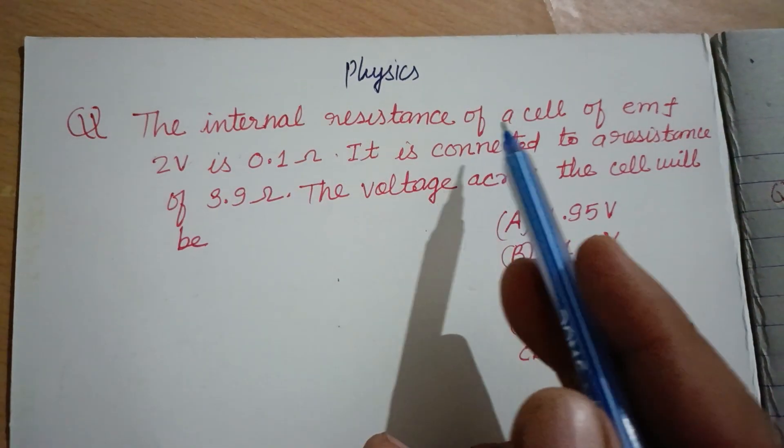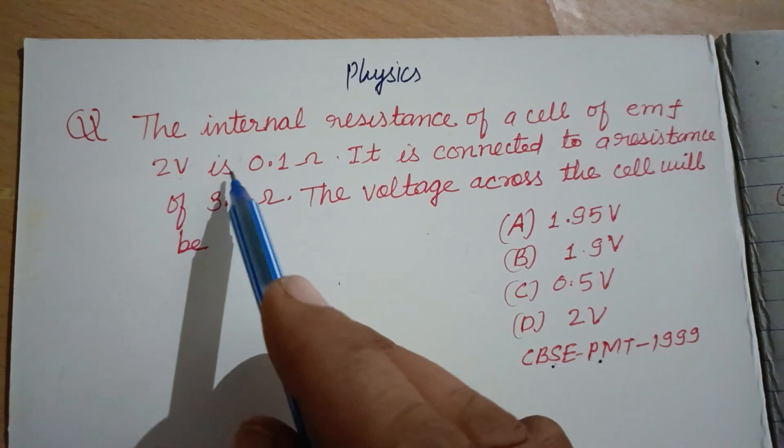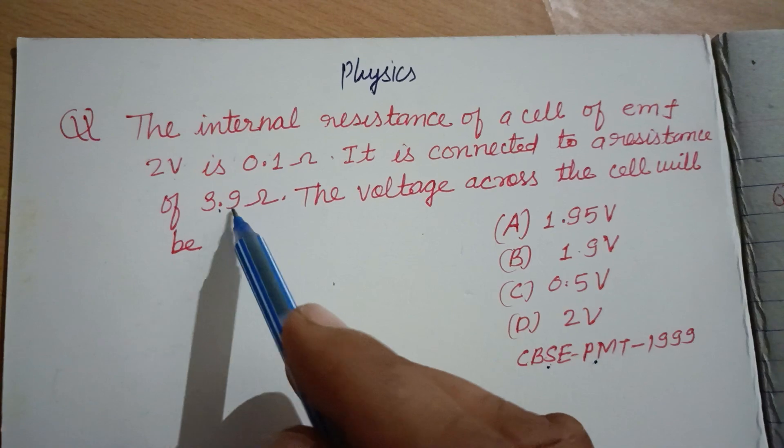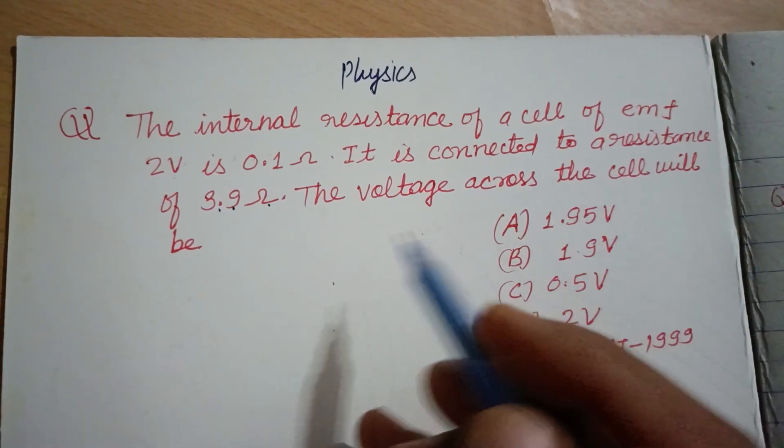The internal resistance of a cell of EMF 2 volt is 0.1 ohm. It is connected to a resistance of 3.9 ohm. The voltage across the cell will be.